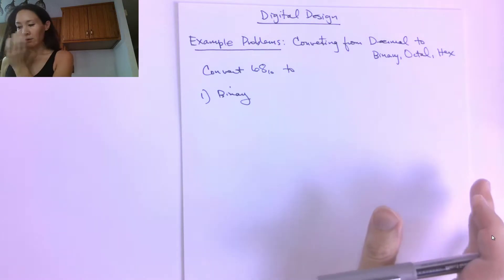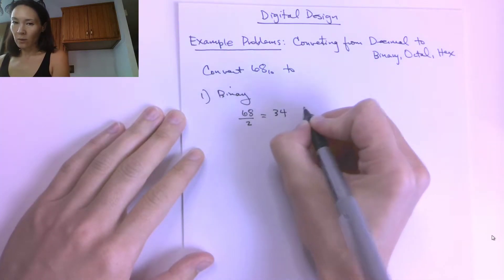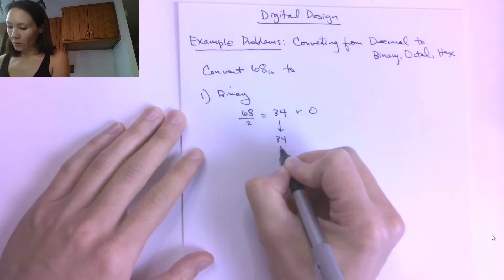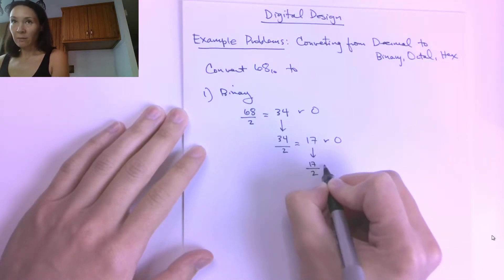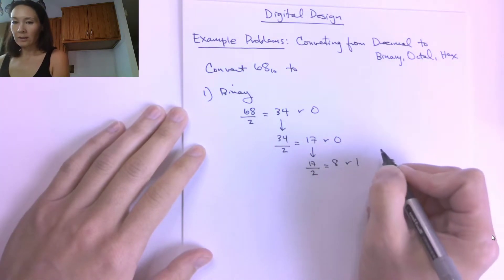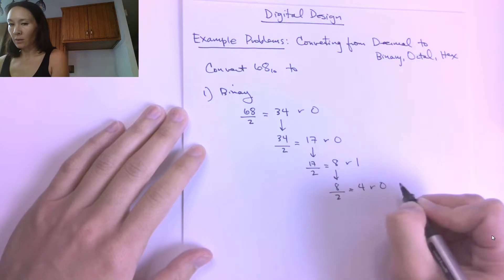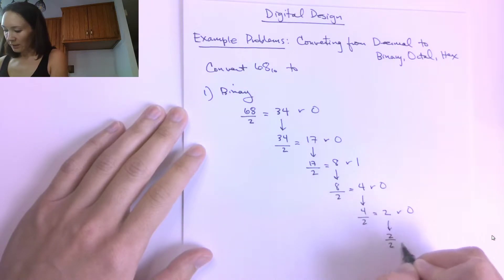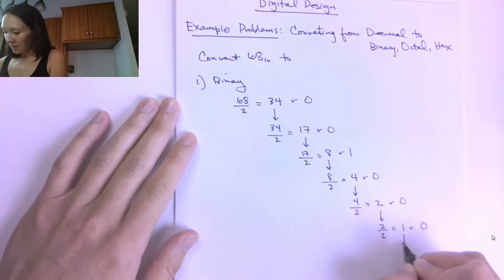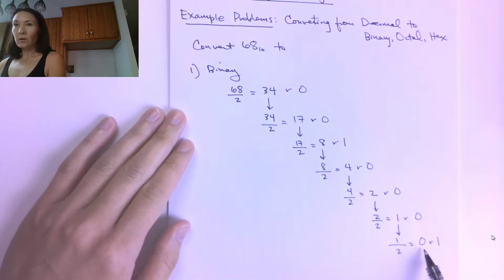We're going to use our division algorithm. We take 68, divide by 2, and get 34 with a remainder of 0. Then 34 divided by 2 gives 17 with a remainder of 0. Then 17 divided by 2 gives 8 with a remainder of 1. Then 8 divided by 2 gives 4 with a remainder of 0. Then 4 divided by 2 gives 2 with a remainder of 0. Then 2 divided by 2 gives 1 with a remainder of 0. Then 1 divided by 2 gives 0 with a remainder of 1. The iterative division algorithm stops when the result equals 0.